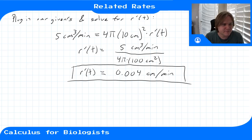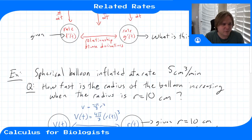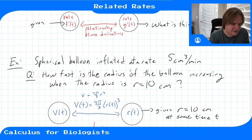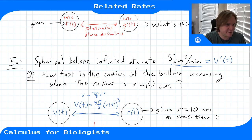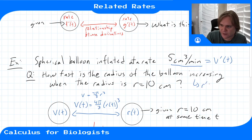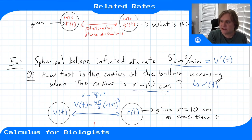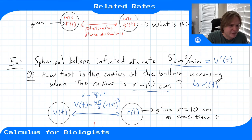To review: we read the word problem and parsed out the given information and what we're trying to find. We were given the volume derivative — the rate of change of the balloon's volume is 5 cm³/min — and we're looking for r prime of t at the moment when r = 10 cm. By reading the problem, we identified the two variables: volume and radius. We're given the volume derivative and the radius at this moment, and we're looking for the rate of change of the radius.